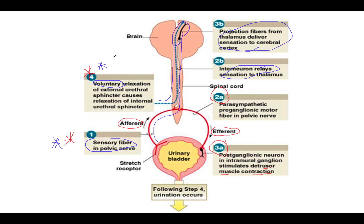So that is the micturition reflex — two different things going on at the same time in order for you to use the restroom. You need to understand that those that can't or don't have full control of this — those are the people that wet themselves. You usually see that in babies and adults. It's mainly because you end up losing this part here. The central nervous system starts to fail and these relays are either slow, meaning you can't make it to the bathroom in time, or you simply lose voluntary control of it and it becomes involuntary — you no longer can control when you go to the bathroom, it just happens. So you see things like diapers if you lose control of it.